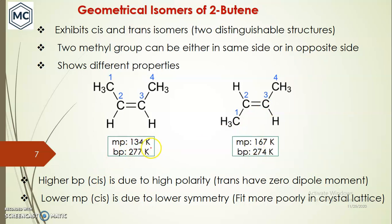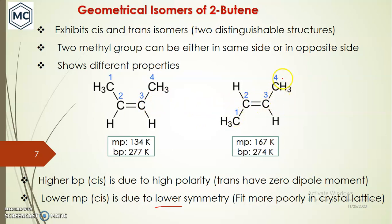For example, the melting point of cis-2-butene is 134 K and in the trans case it is 167 K. The boiling point is 277 K for cis and 274 K for trans. The higher melting point of trans is because cis has lower symmetry — when two groups are on the same side, they fit very poorly into the crystal lattice. In the trans case, the molecule fits very well into the crystal lattice, which is why it shows a higher melting point.